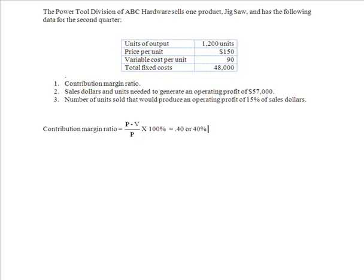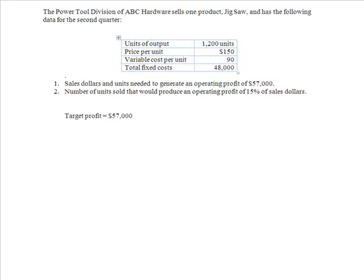Sales dollars and units to generate an operating profit of $57,000, let's do that one next. If I have a target profit of $57,000, then I've got to sell a given number of units X at my price in order to equal not only my fixed costs of $48,000 but also cover my target profit. And because I don't get to keep all $150 of that price per unit, I have to divide it by the contribution margin.